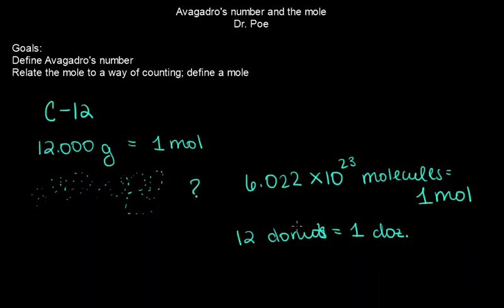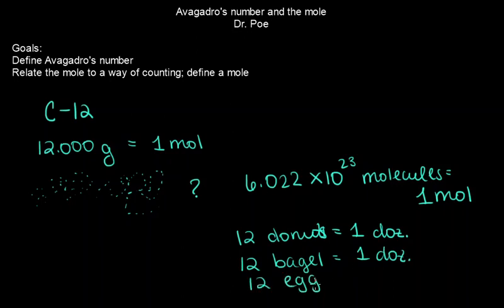Just like we could have 12 donuts in one dozen, we could also have 12 bagels in one dozen, or 12 eggs. It doesn't matter what element this represents — this could be 6.022 times 10 to the 23rd molecules of carbon, oxygen, arsenic, selenium, gallium, or any element on the periodic table. 6.022 times 10 to the 23rd molecules of it equals one mole.